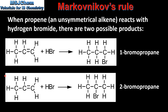In these two reactions we have identical reactants — propene and hydrogen bromide — but in the first reaction the product is 1-bromopropane, and in the second reaction it's 2-bromopropane. Next we'll use Markovnikov's rule to decide which one is the major product.